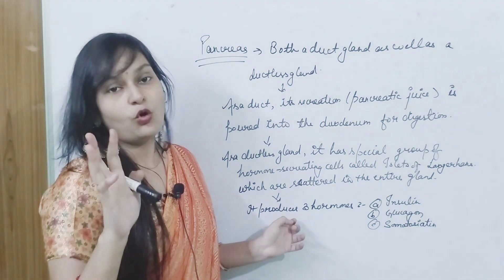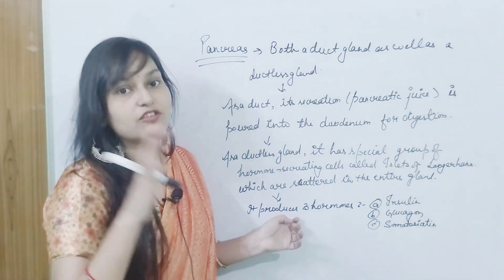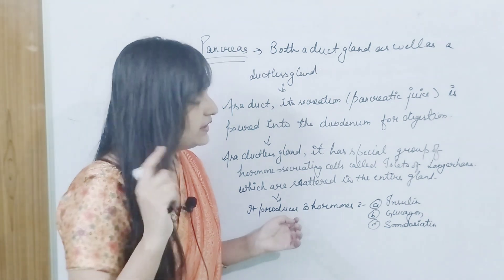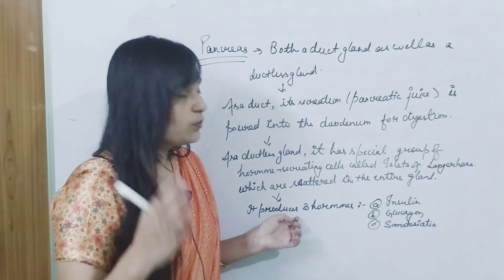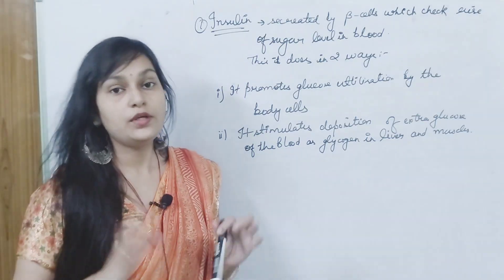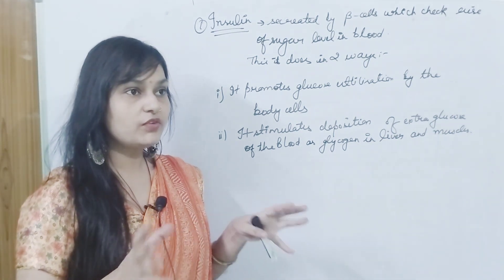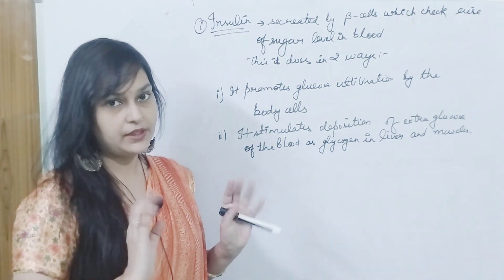Now, the three hormones produced by Islets of Langerhans. Which are the three hormones? Insulin, glucagon, and somatostatin. So now, insulin. What is the function of insulin? What is regulated in the body?